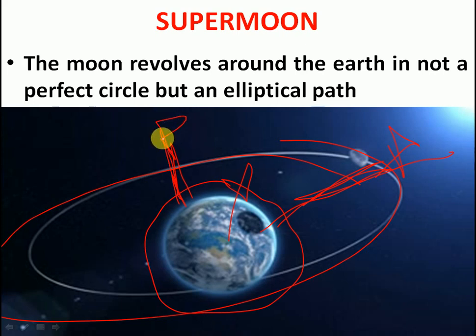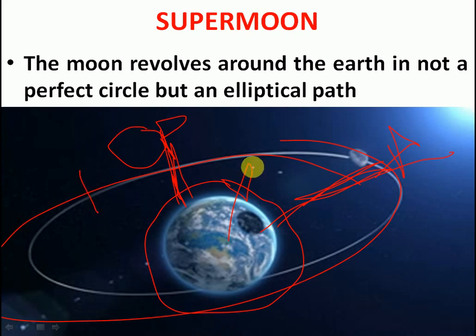The moon revolves around the Earth and takes around 27 days, passing through different phases during this time. One of those phases is the full moon. The full moon can occur at any point in the elliptical orbit — it can occur here, it can occur here, it can occur here.